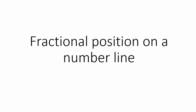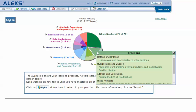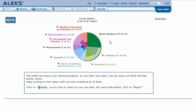Fractional position on a number line. In your ALEKS Pie, mouse over the light green slice fractions to reveal the drop-down list of topics you need to cover. Click on fractional position on a number line.